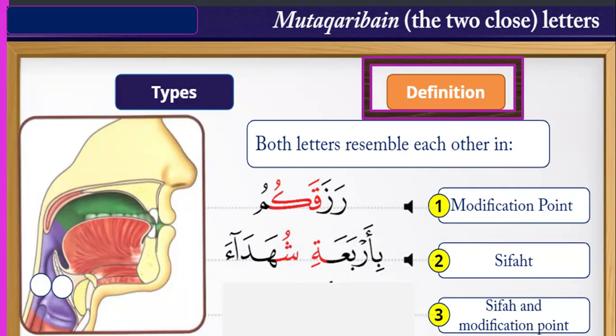An example of shared sifa: the letters ت، ث، ش come from the tongue and share the characteristic of being light sounds — مرققة. So the sifa and the articulation point are shared among them.